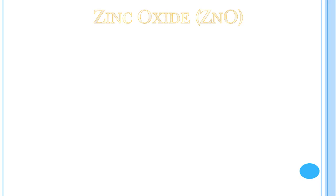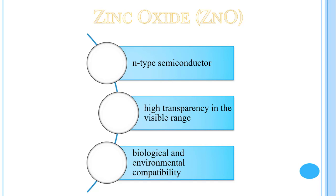ZnO – Zinc Oxide. ZnO is a wide band gap n-type semiconductor. It has high transparency in the visible range and is biologically and environmentally compatible.